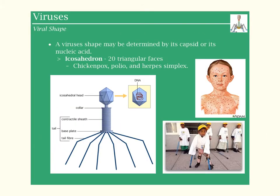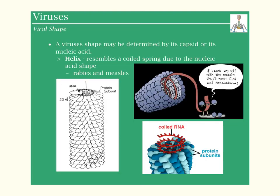A virus shape may be determined by its capsid and nucleic acid, as I mentioned. So we have an example of an enveloped virus like HIV. Some of the coolest viruses — like chickenpox, polio, and herpes — have this icosahedron shape. A lot of times these little legs will attach and then the DNA will be injected into the host cell. Pretty crazy stuff.